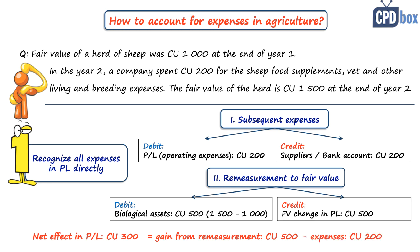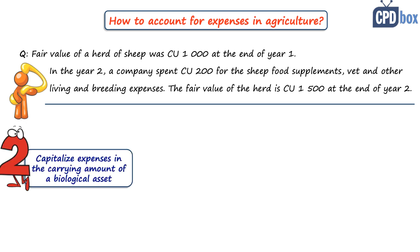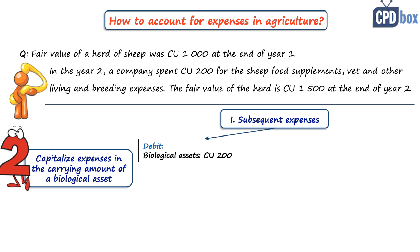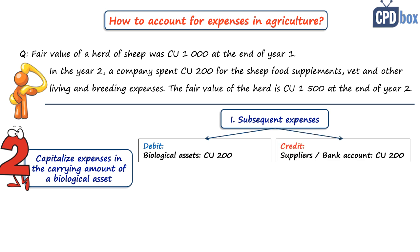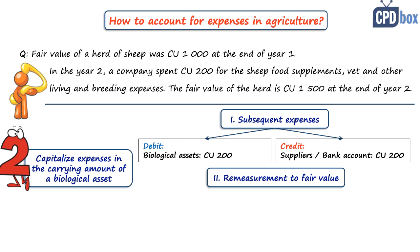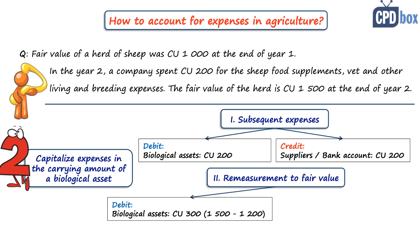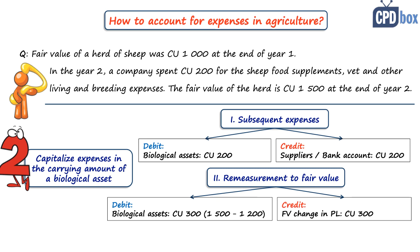Under option two, capitalizing all expenses, the journal entry for subsequent expenditure is: debit biological assets 200 currency units, credit suppliers/bank account 200 currency units. The remeasurement entry at end of year two is: debit biological assets 300 — because fair value is 1,500 and carrying amount is 1,200 (original 1,000 plus 200 capitalized) — and credit fair value change in profit or loss 300. The net effect on profit or loss is still 300 currency units — the same as option one, just the presentation is different.